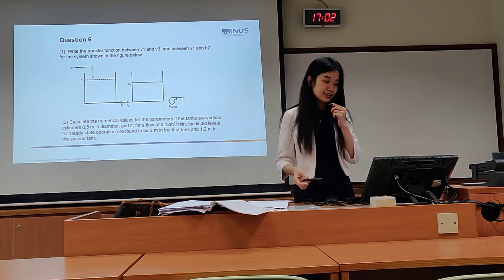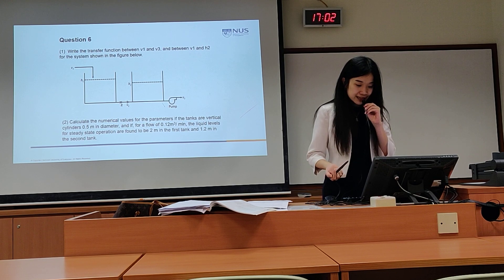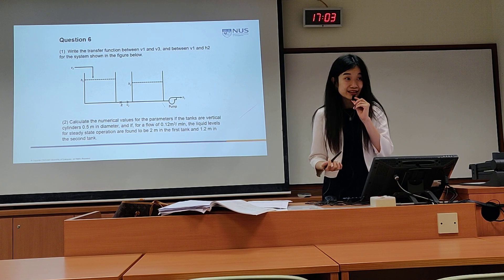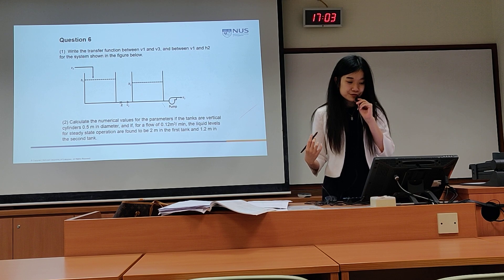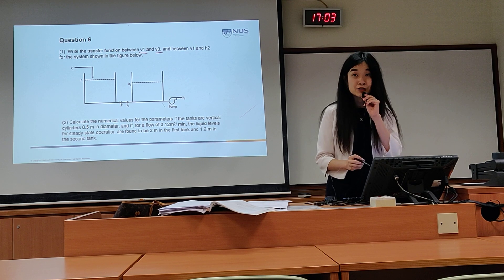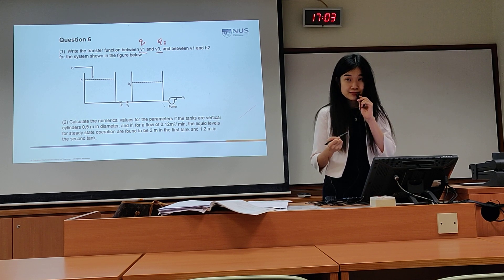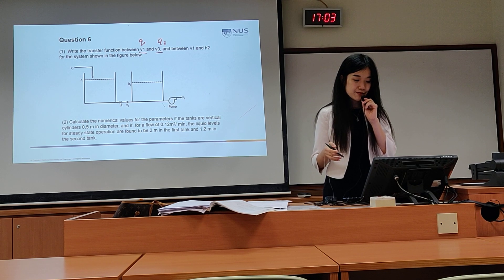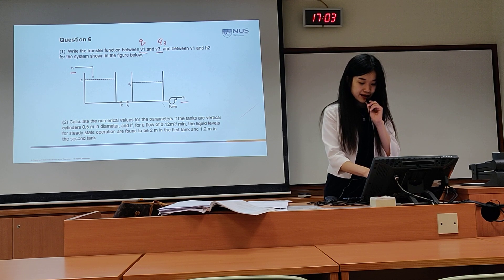Let's first look at example question 6. For the flow sheet diagram shown here, it looks very familiar to the one we have in the lecture, but pay attention to the details — is this the same one or is it a little bit different? The task is to write the transfer function between V1 and V3. V1 and V3 indicate the volume flow rate. V1 is the inlet flow to the first tank, and V3 is the final outlet.